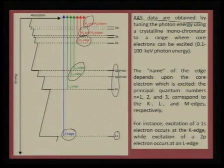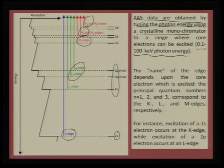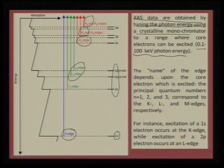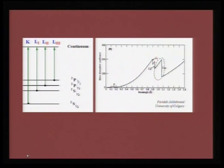XAS data are obtained by tuning the photon energy using a crystalline monochromator to a range where core electrons can be excited, and the range is typically of the order of 0.1 to 100 keV photon energy. Depending on the range, we can selectively try to knock out a particular core electron. If we talk about the K edge, we are talking about very high energy radiation. If we are talking about 2p levels, that is L edges at medium range, and then still smaller ranges for 3d, 3s, and 3p. This is how we designate K, L1, L2, and L3.